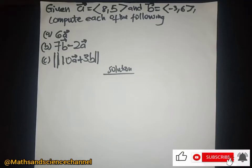Hello students, welcome once again to my channel. This time we have a vector question, giving vector a equal to (8, 5) and vector b equal to (-3, 6), and we will compute each of the following.